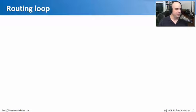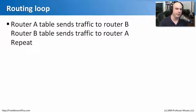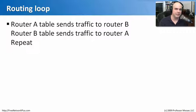Routing loops sound very similar to a switching loop, but functionally they operate very differently. The routing loop works like this: you have a routing table inside a device that says, if I need to get this traffic out, I send it to router B. Router B has a table that's misconfigured and says that should go to router A. So A sends it back to B, B sends it back to A — it just bounces like a tennis ball back and forth.